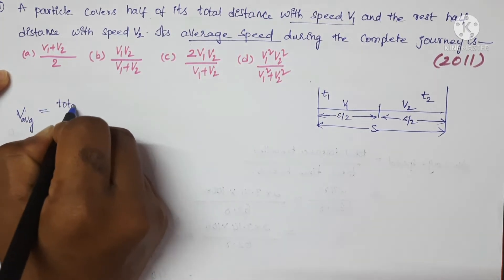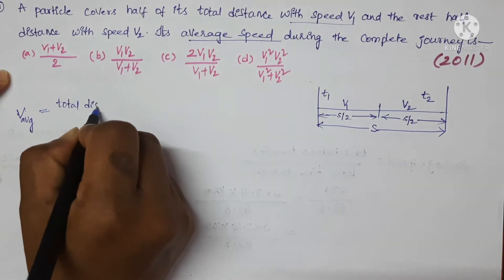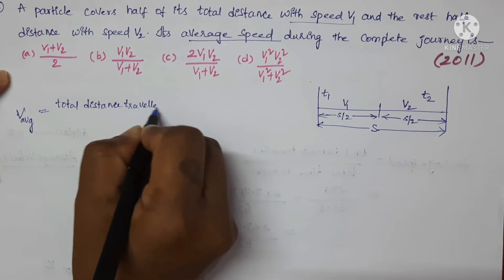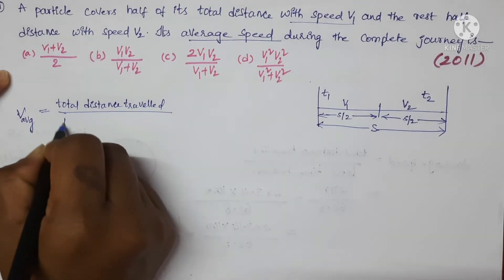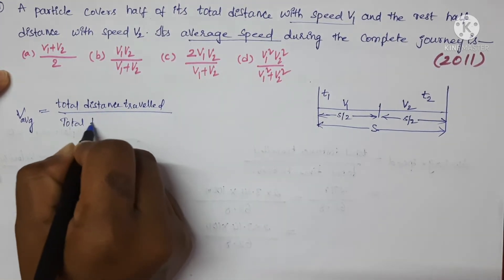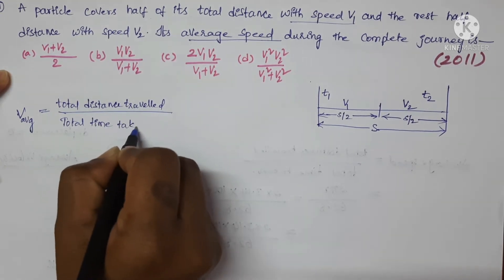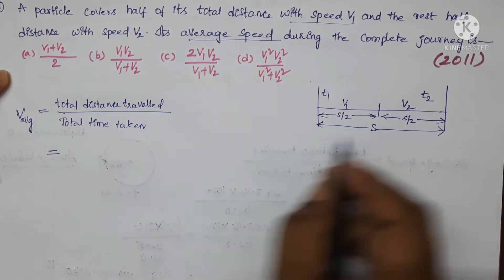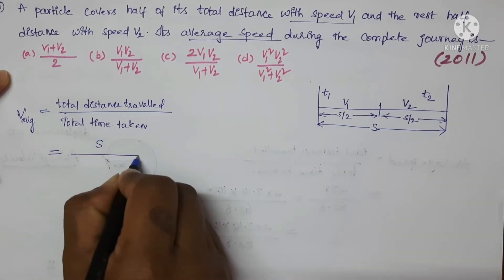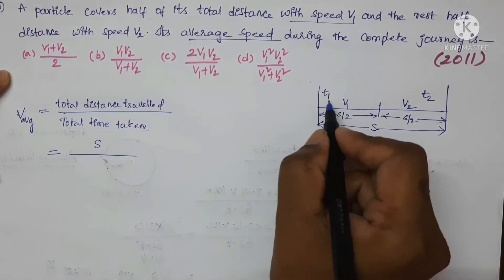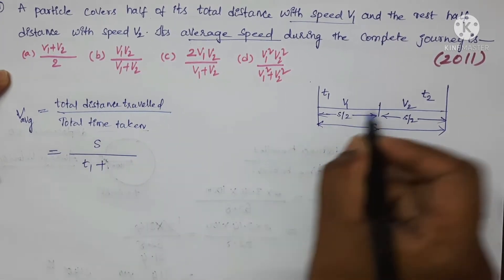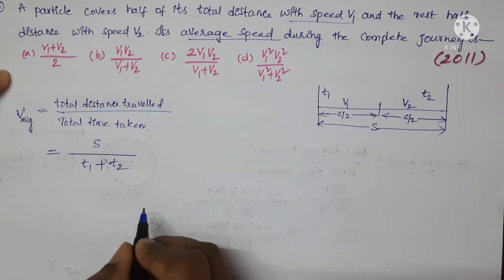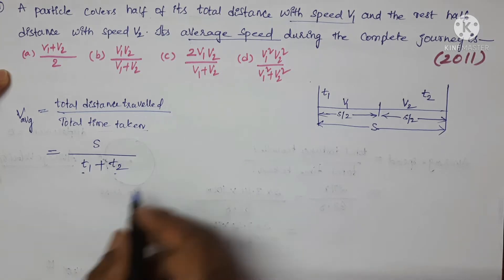The formula for average speed is total distance traveled upon total time taken. Here the total distance traveled by the particle is s, upon total time taken. For the first half the time is t1 and for the second half the time is t2. Now we have to find the values of t1 and t2.